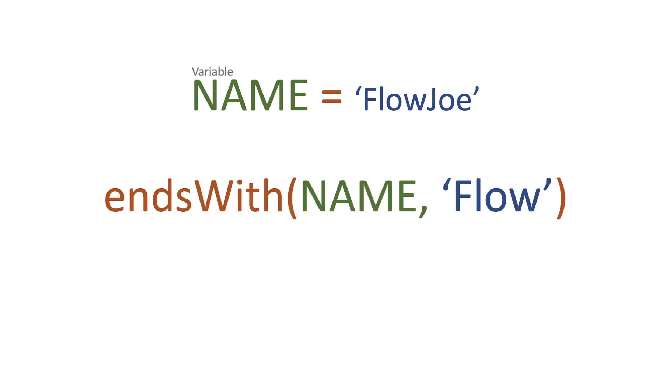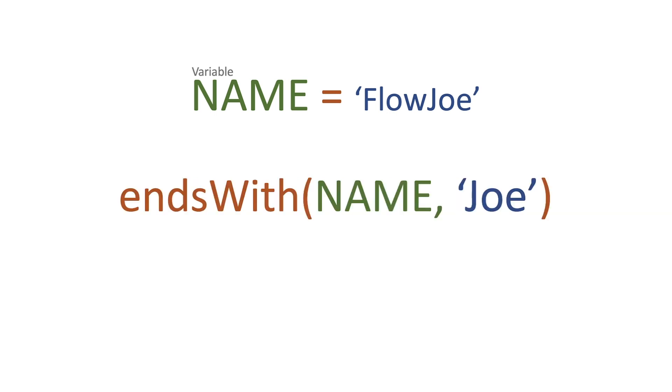Now we have the same variable NAME of FlowJoe. Let's do endsWith - we'll pass the variable in, but this time pass in 'Flow' to see what happens. We know that Flow is not at the end of FlowJoe, Joe is. What do we get back? False, because the statement that Flow is at the end of FlowJoe is false.